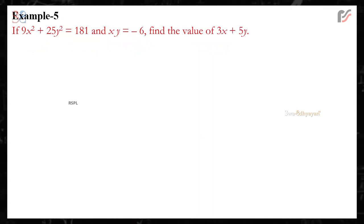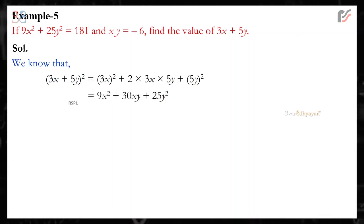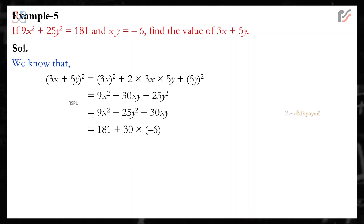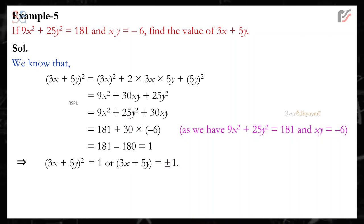Example 5: If 9x² + 25y² = 181 and xy = −6, find the value of 3x + 5y. Solution: (3x + 5y)² = (3x)² + 2 × 3x × 5y + (5y)² = 9x² + 30xy + 25y² = 181 + 30 × (−6) = 181 − 180 = 1. This implies (3x + 5y)² = 1, so 3x + 5y = ±1.